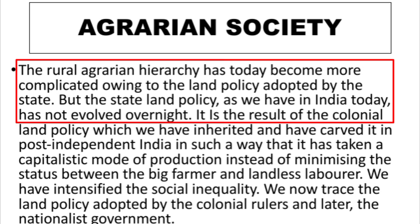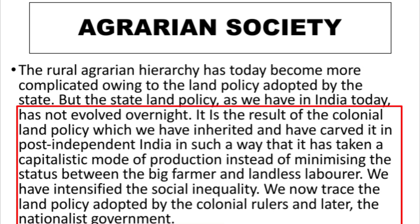A crucial feature and the most basic problem of the rural agrarian system is that no tax is imposed on those who control large portions of land, so they gain maximum benefit from their production. As a result, the rural agrarian hierarchy is increasingly complicated. Capitalist and colonial land policies are still used today to minimize the status gap between farmers and landless labor. Social equality can be traced through land policies adopted by colonial rulers and later by nationalist governments.